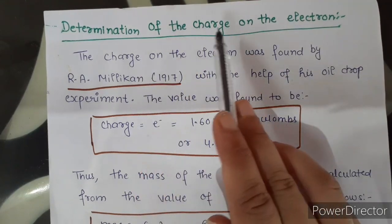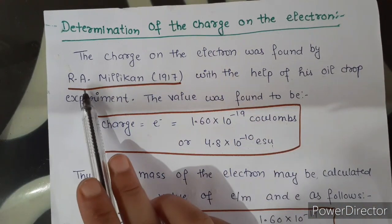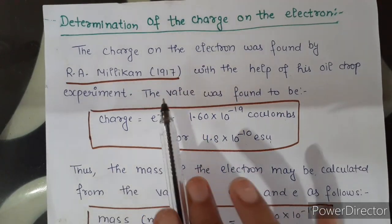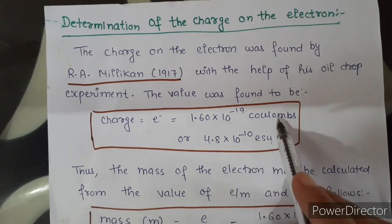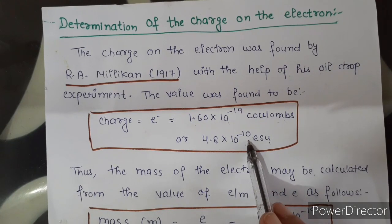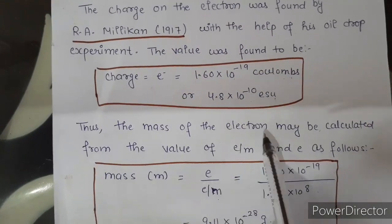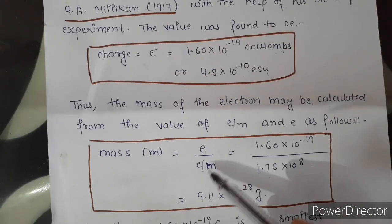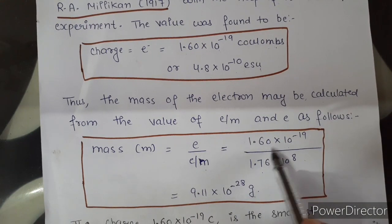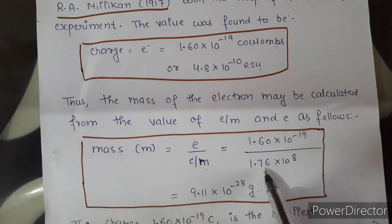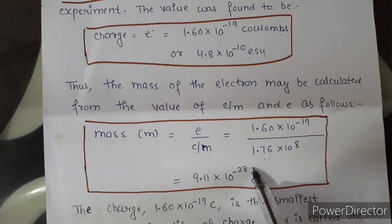For the determination of charge on the electron, the oil drop experiment was done by R.A. Millikan in 1917, and the value was found to be 1.6 × 10⁻¹⁹ coulombs or 4.8 × 10⁻¹⁰ ESU. Thus, from the value of charge and the charge-to-mass ratio given by Thomson, the mass of the electron can be calculated as: mass = charge / (charge-to-mass ratio) = 1.60 × 10⁻¹⁹ / 1.76 × 10⁸ = 9.11 × 10⁻²⁸ gram.